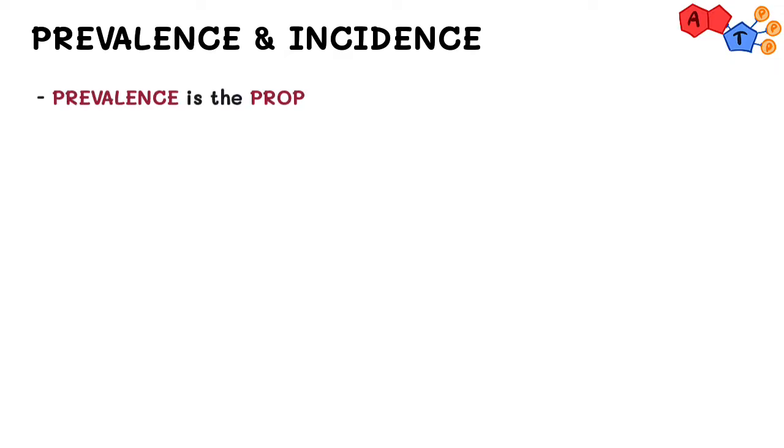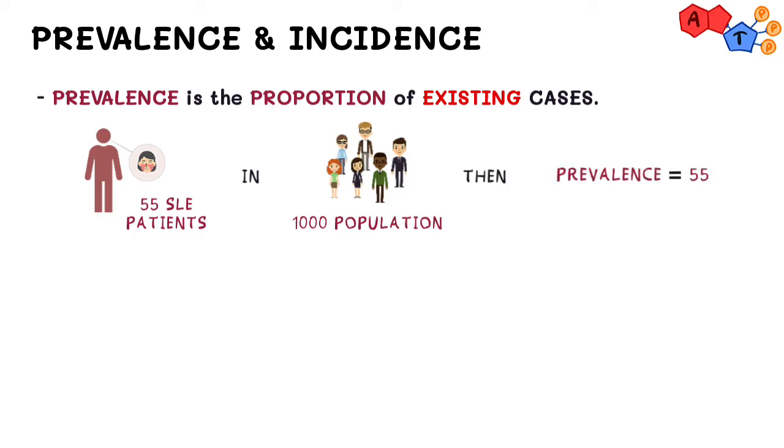Prevalence describes a proportion of how many existing cases there are for any given population. For example, if there are 55 people afflicted with SLE out of 1,000 in a given population, then the prevalence of SLE in that population is 55 out of 1,000.